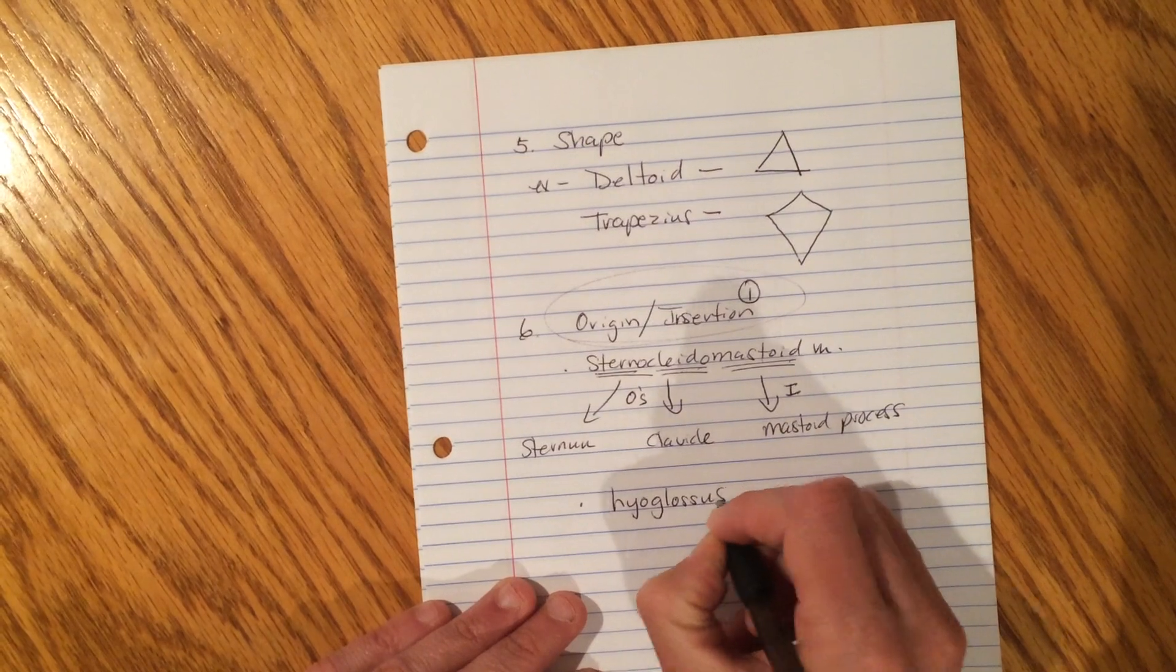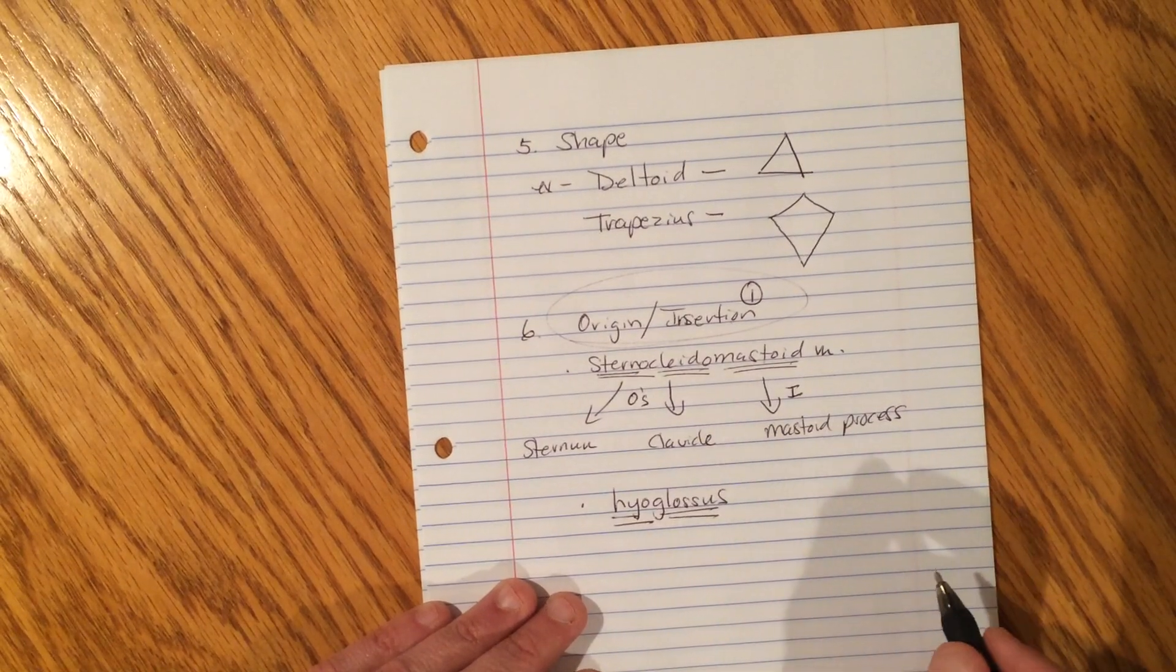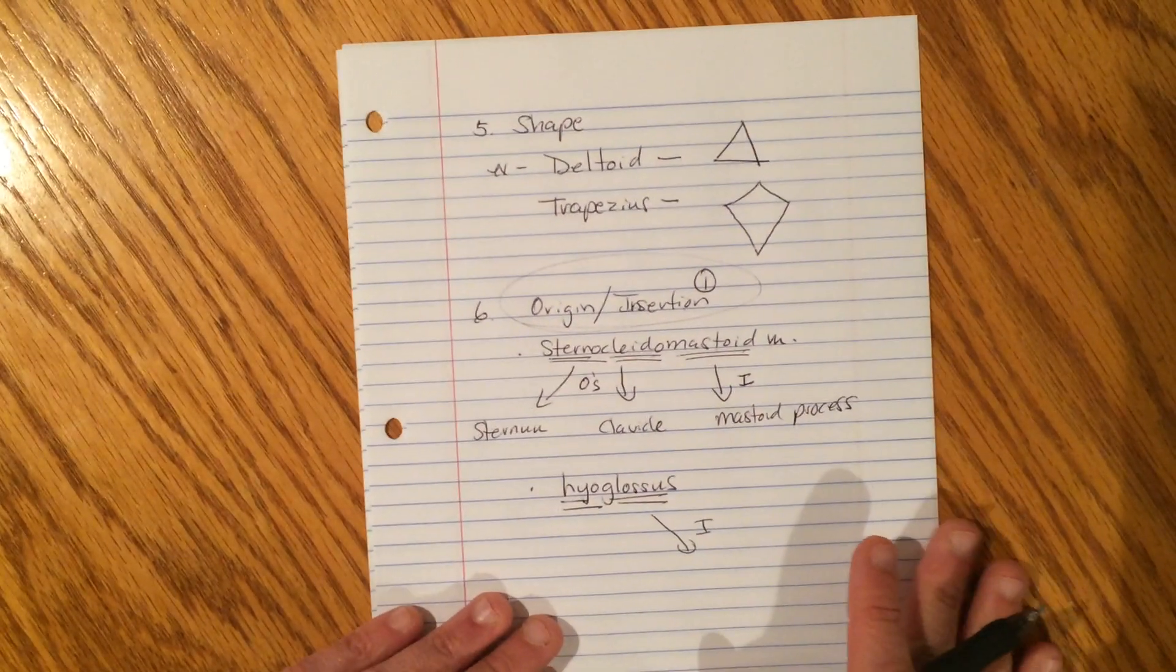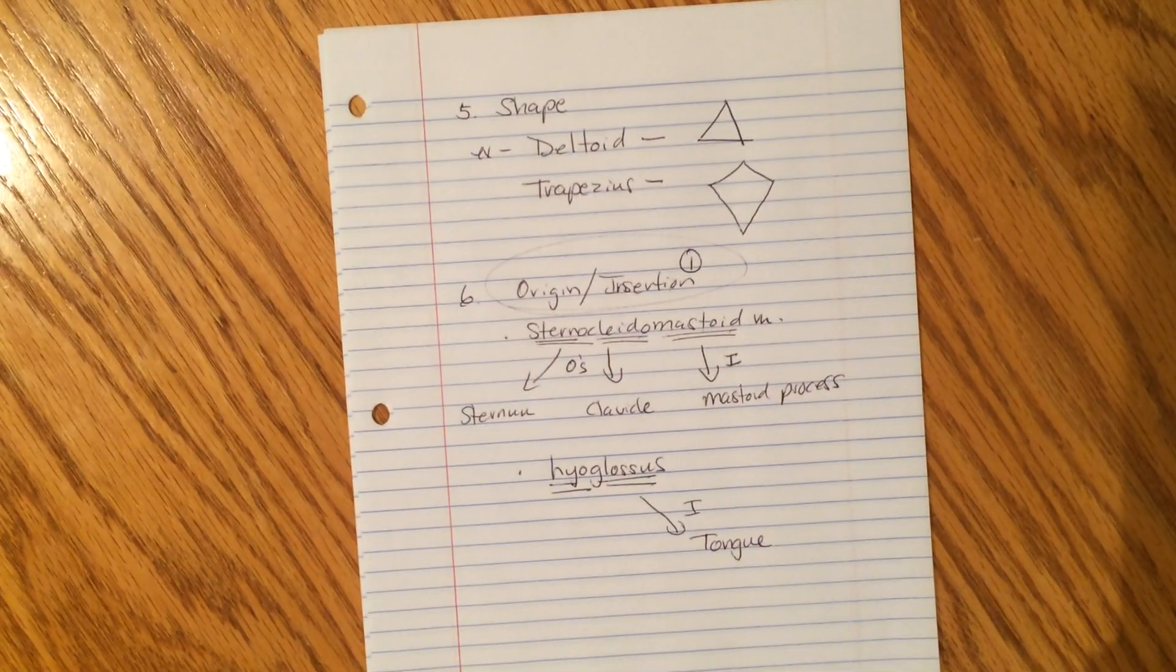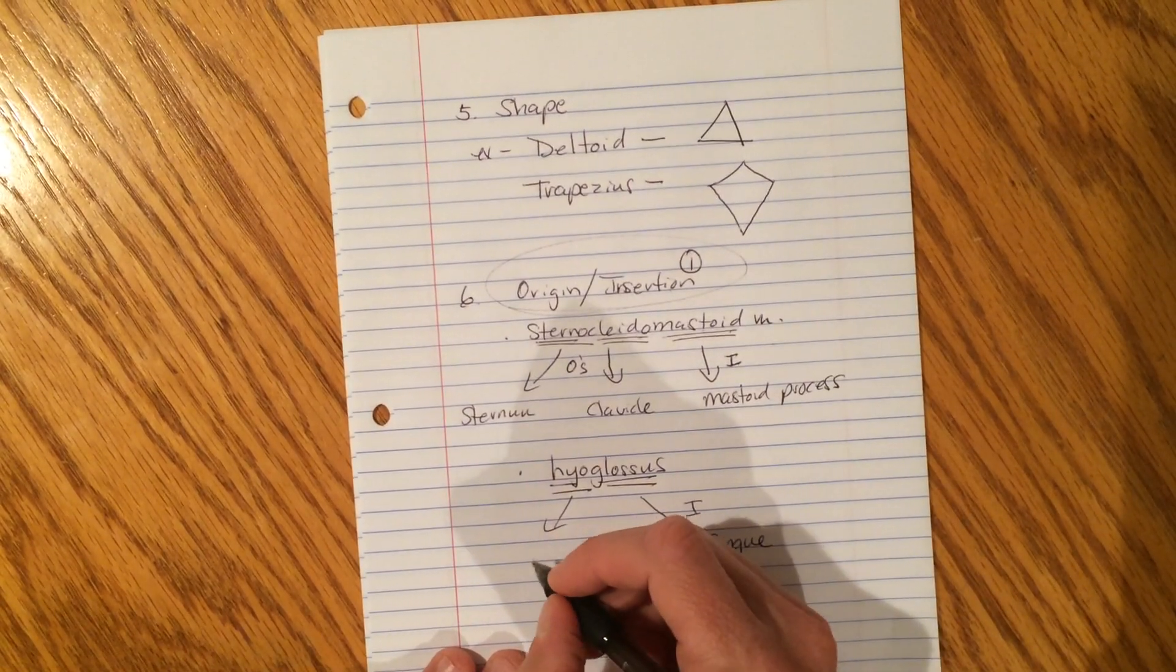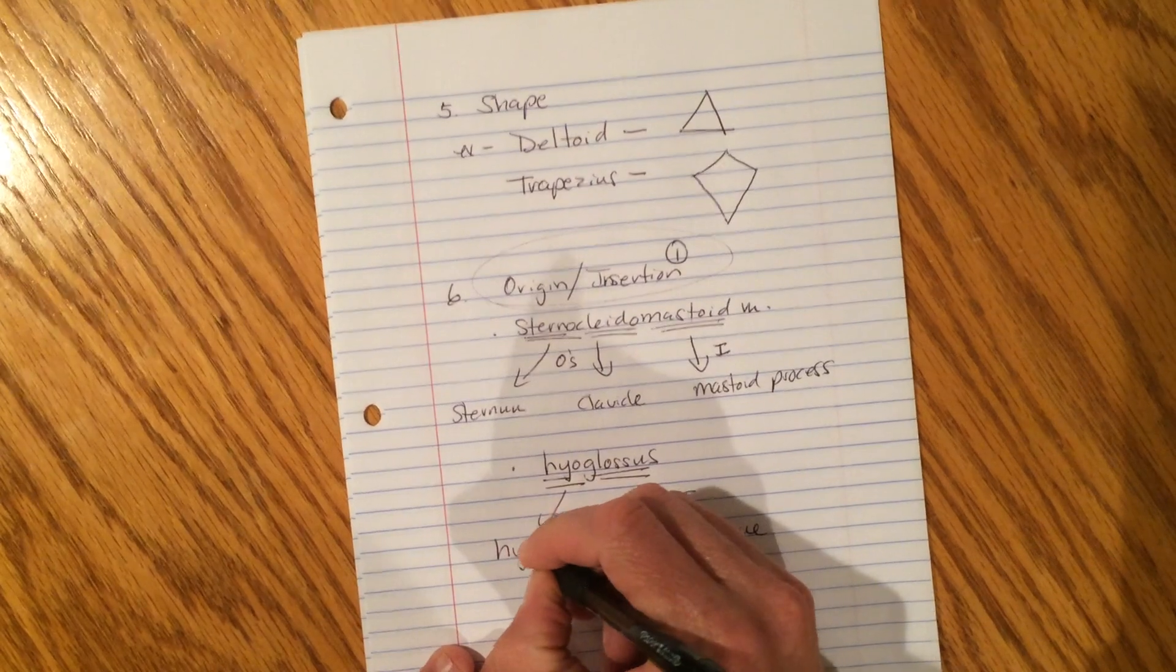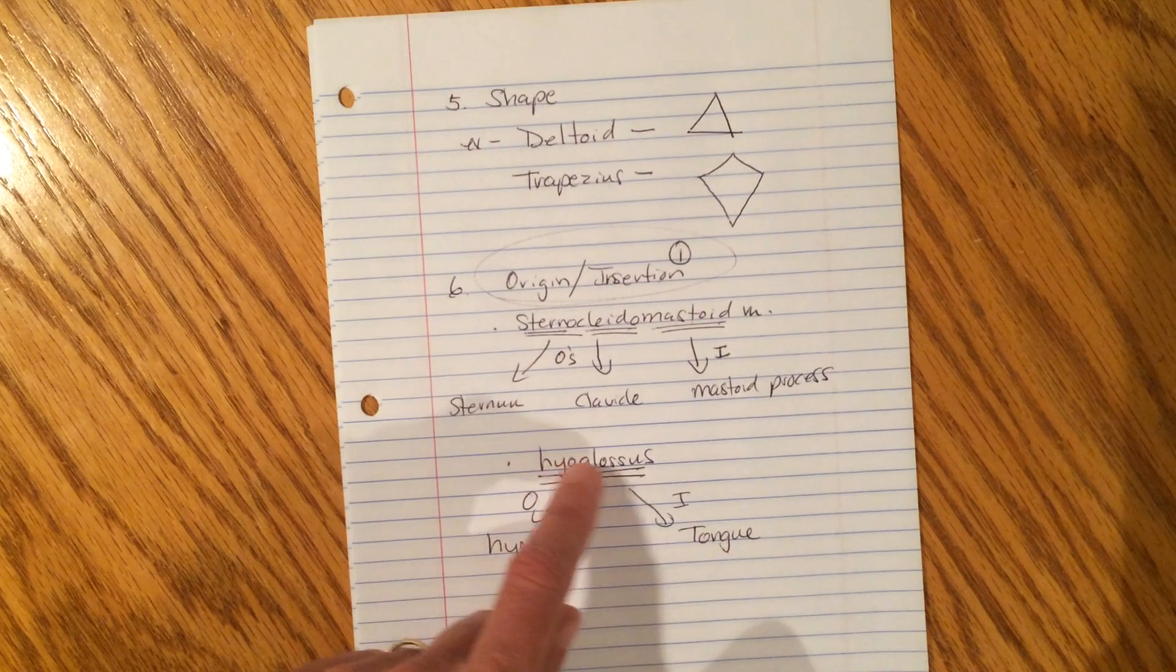Hyoglossus. Hyoglossus. Now, look. Hyo is one reference. Glossus is the other reference. So, we always start at the end. So, what is the insertion point? Glossus. You could look this up on the internet, but I'll save you the time because I already know it. Glossus means tongue. Very good. Tongue. And then hyo, what do you think hyo refers to? Everybody knows this one. It's that weird little bone right under your mandible. Doesn't articulate with any other bones. Helps to move and support the tongue. That would be the hyoid bone. So, that's the origin. That's the insertion. Hyoglossus.